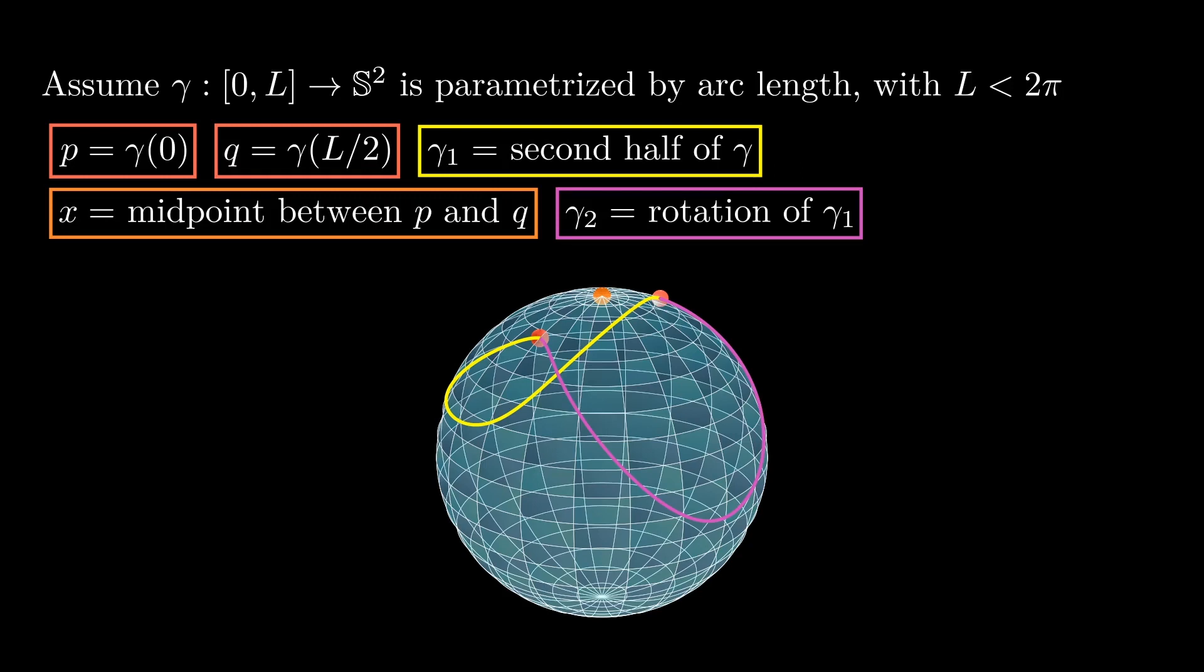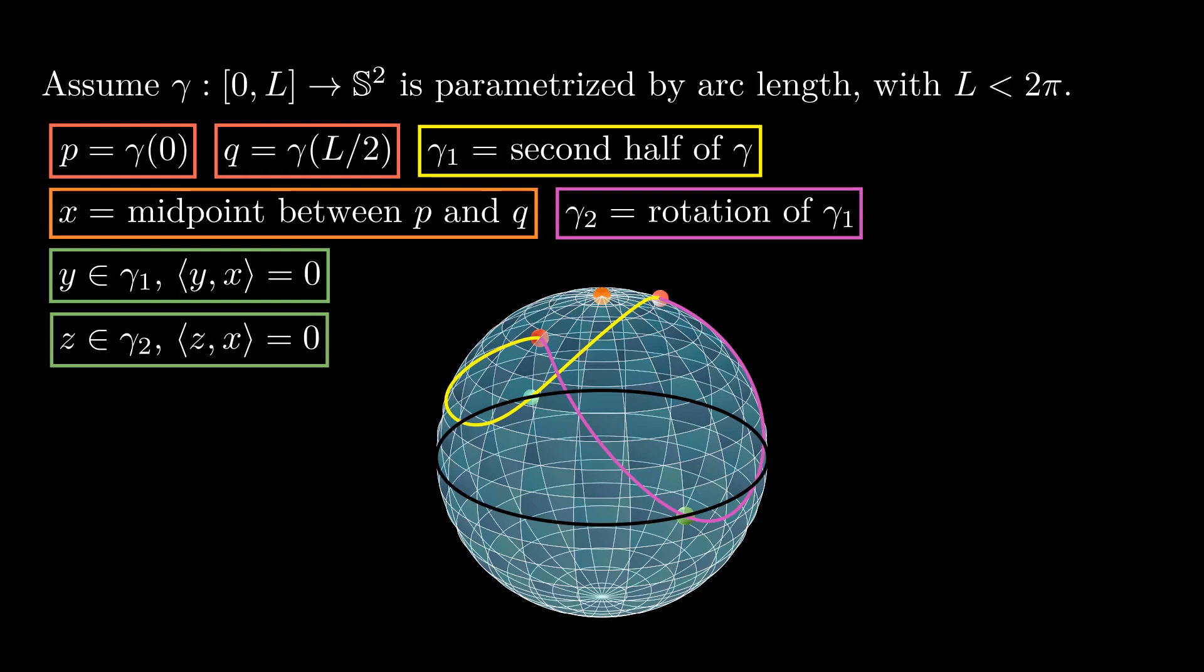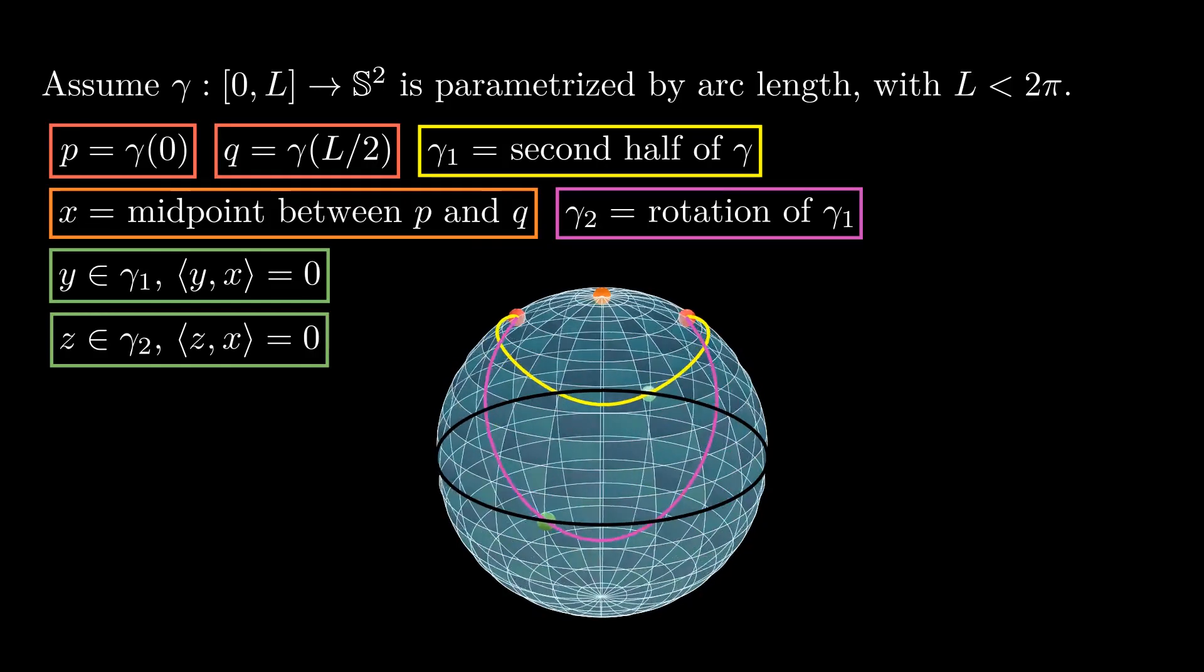If this new curve is not strictly contained in the hemisphere centered at x, then it touches the equator corresponding to the plane orthogonal to x at two antipodal points. Call these two points y and z. Since this curve goes from y to z and back, its length must be at least 2π, which is a contradiction.